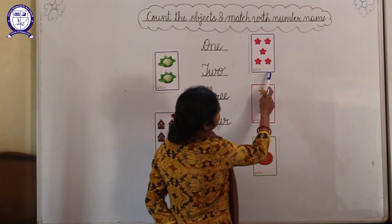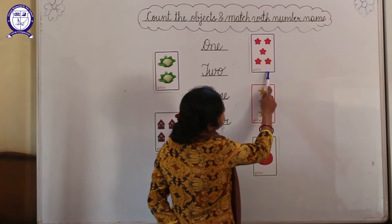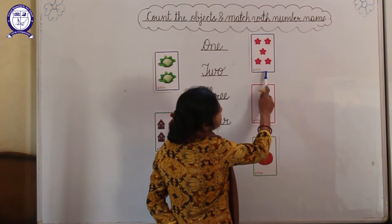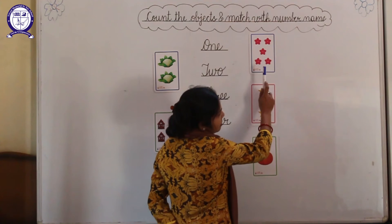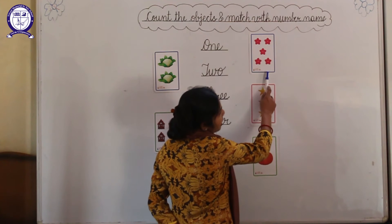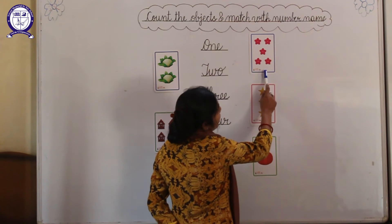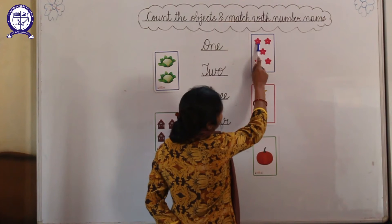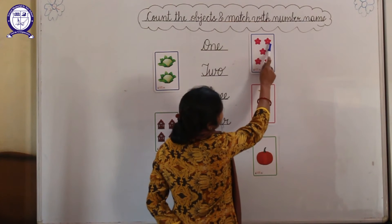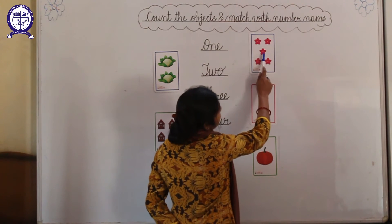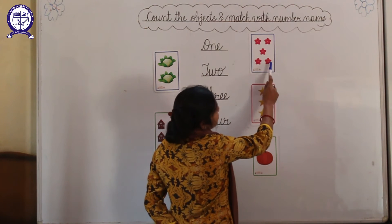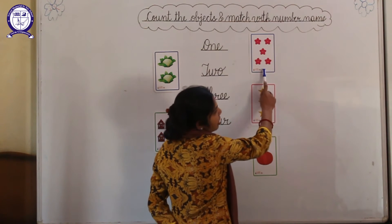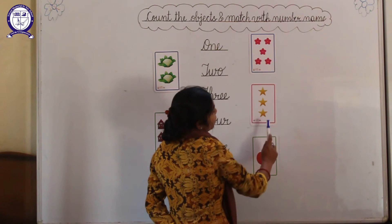Next beta, which picture is this? These are flowers. And how many flowers are there? 1, 2, 3, 4, 5. These are 5 flowers.